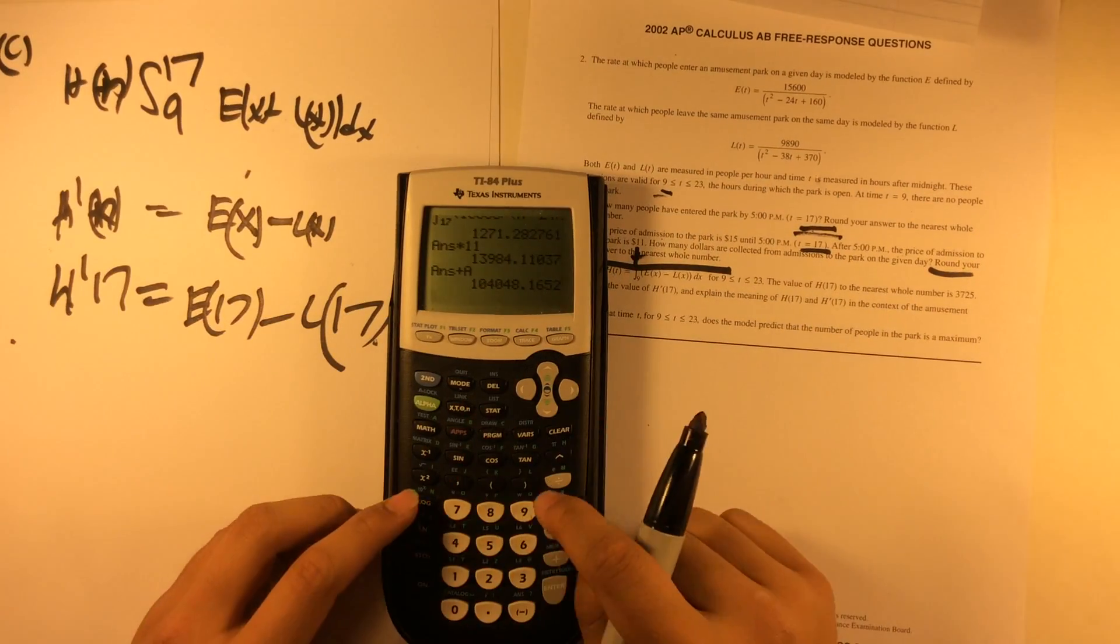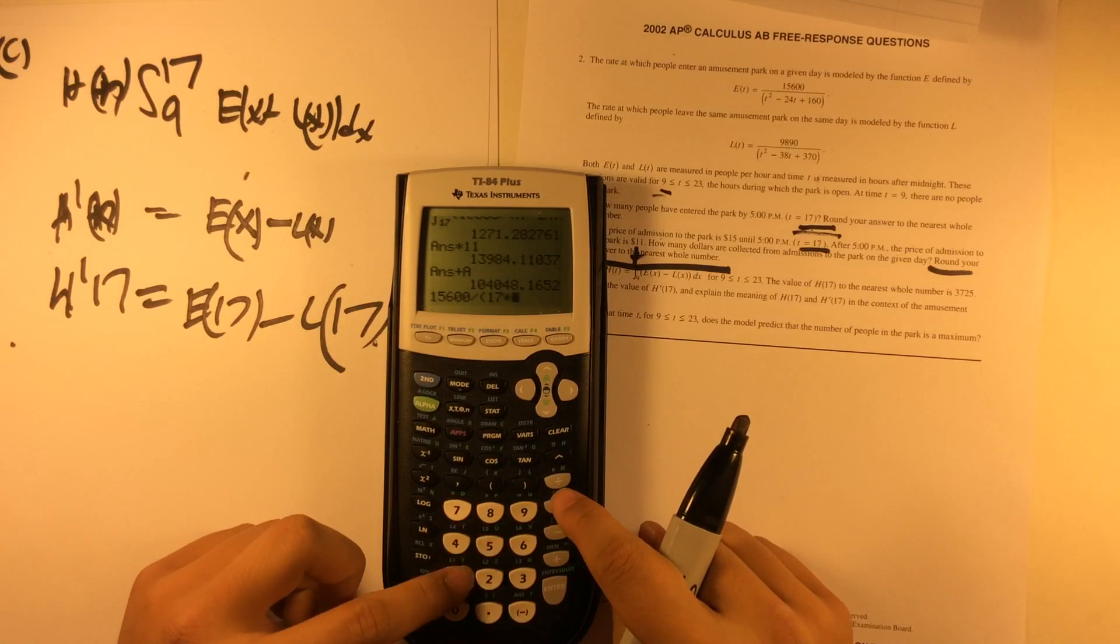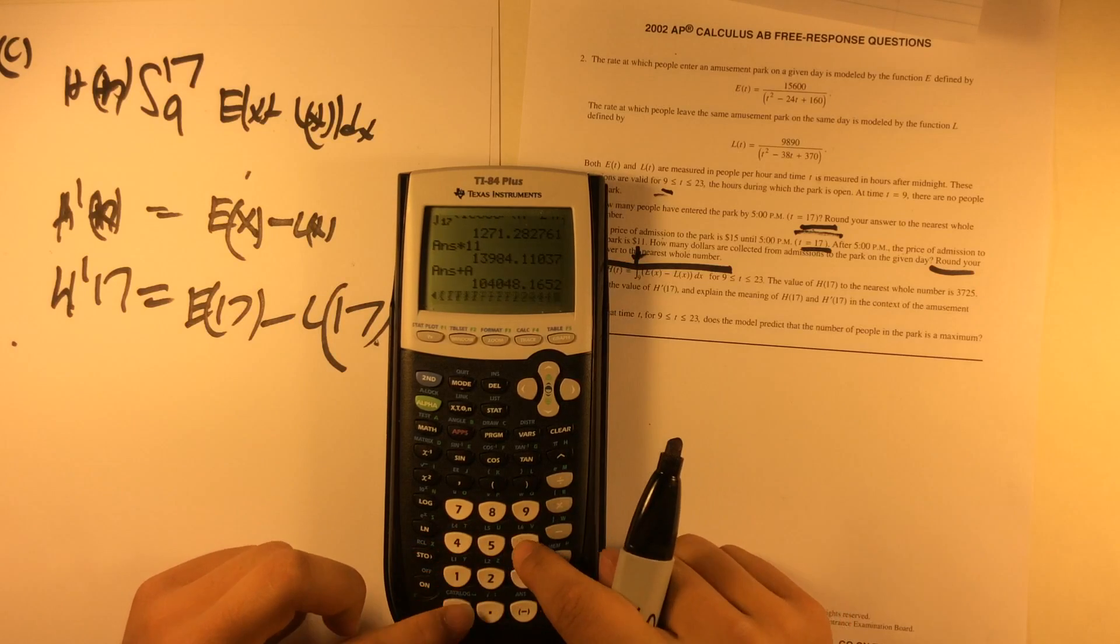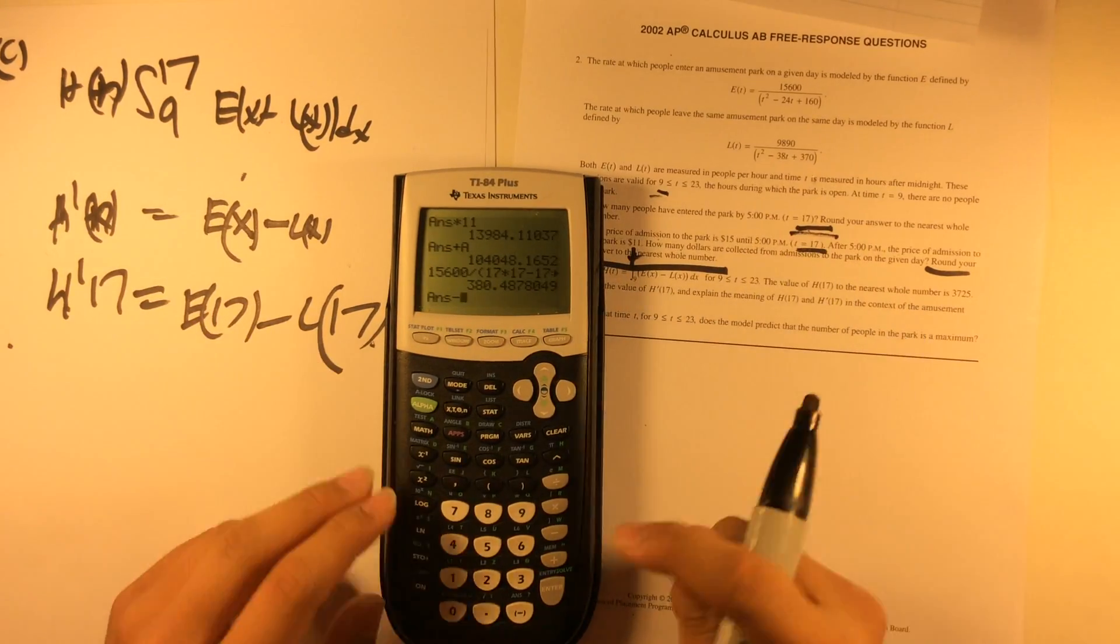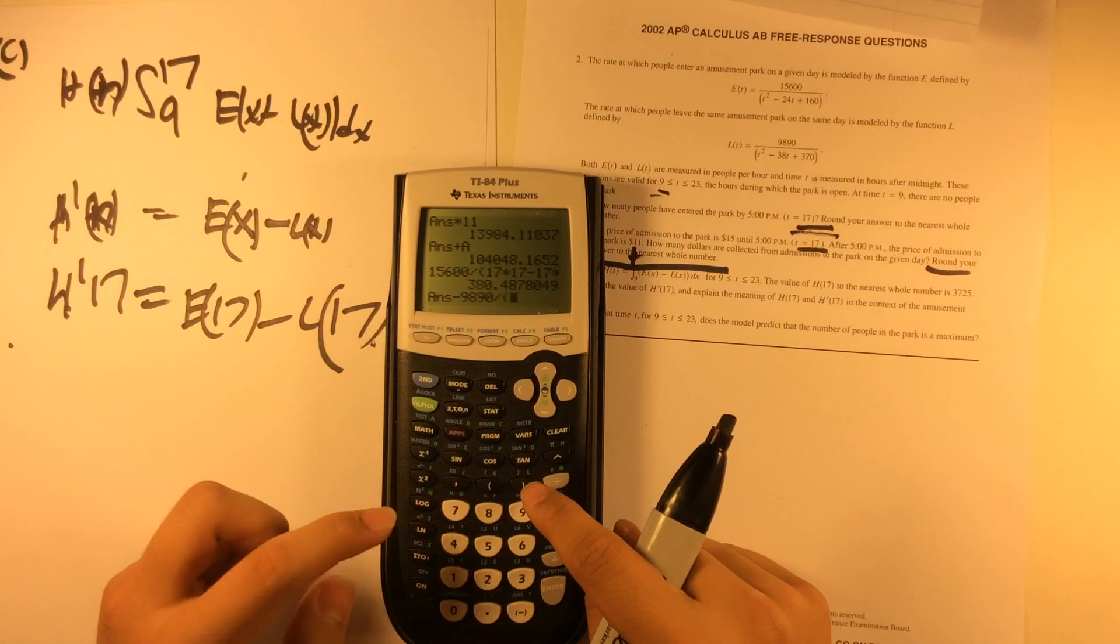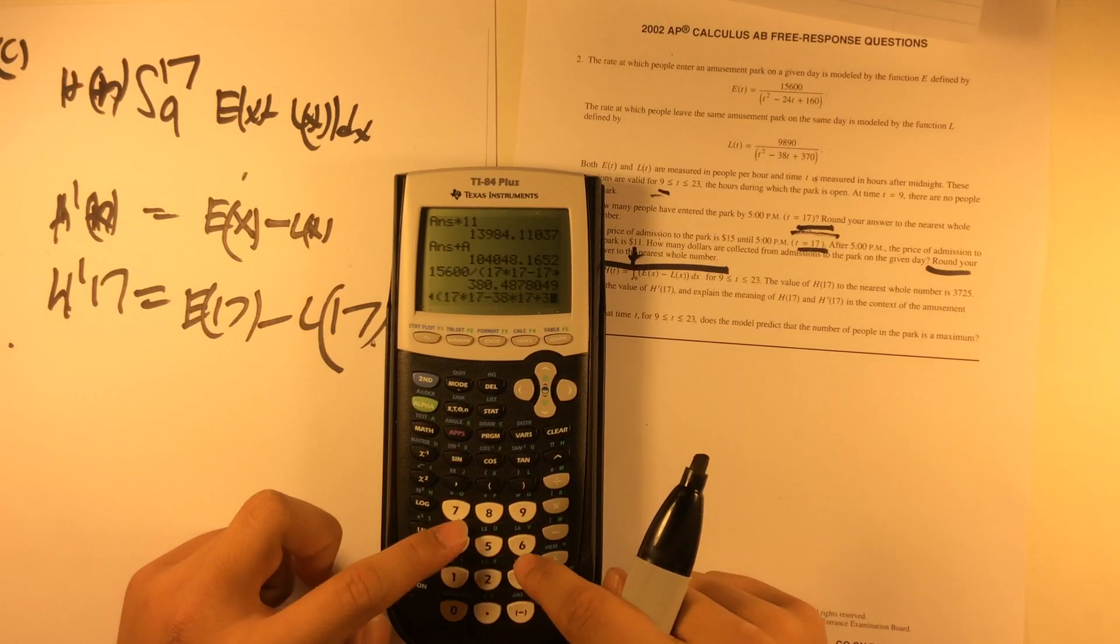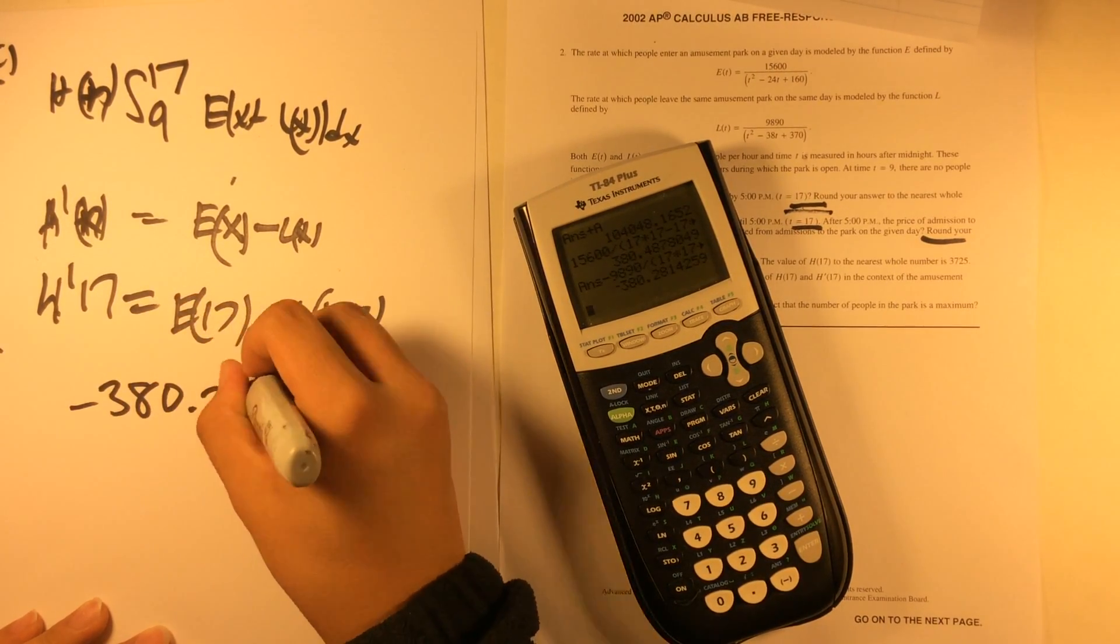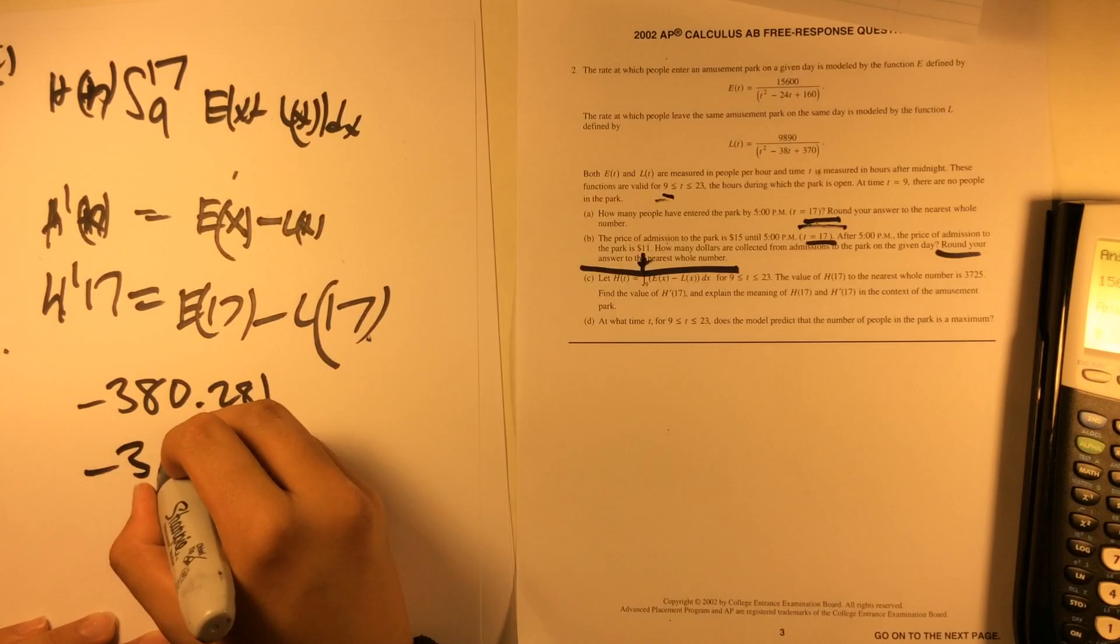With some calculator work, this is basically 15600 divided by 17 times 17 minus 17 times 24 plus 160. That equals this number, and then you subtract L(17) from it, which is 9890 divided by 17 times 17 minus 38 times 17 plus 370. That answer gives you negative 380.281, round to the nearest whole number, so approximately negative 380.